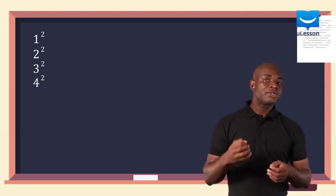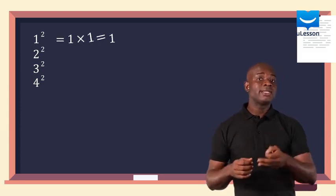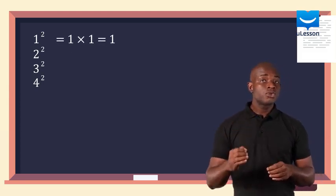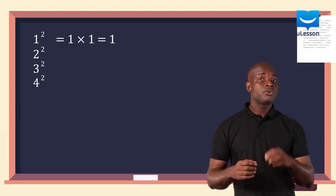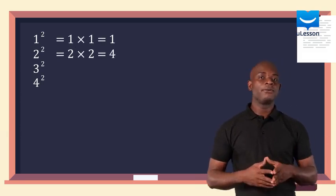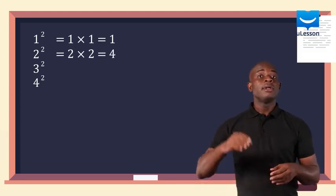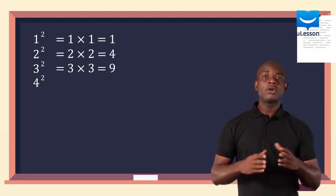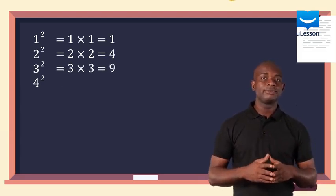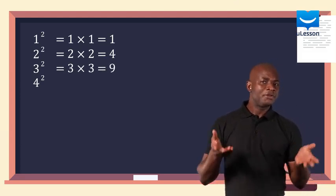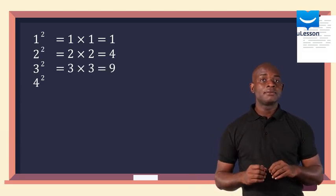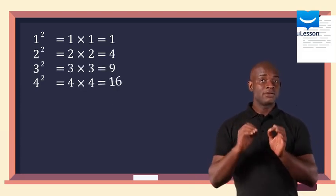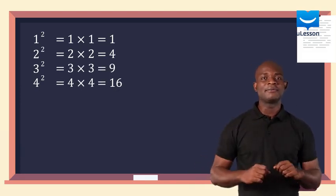So, 1 squared is 1 times 1 equal to 1. 2 squared is 2 times 2 equal to 4. 3 squared is 3 times 3 equal to 9. Can you tell me what 4 squared is? It is 4 times 4 equal to 16.